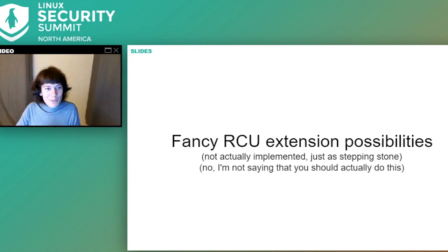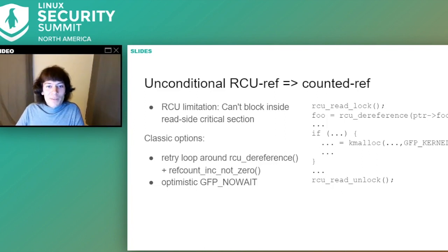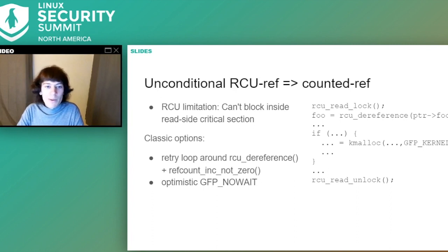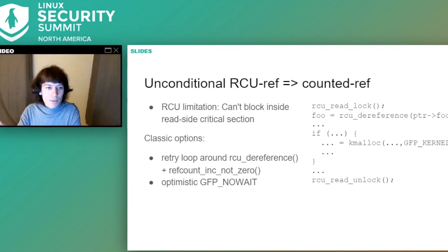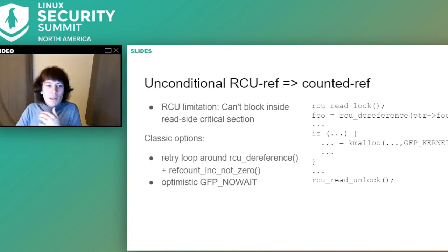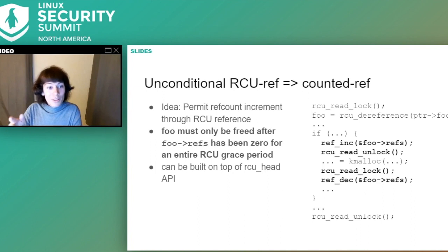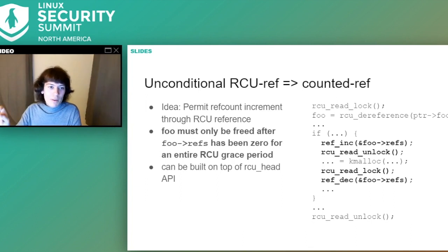This is just meant as a mental stepping stone — not necessarily something you should actually be implementing. When you're working with RCU, you often have the scenario where you're inside an RCU read-side critical section holding an RCU reference to some object, and you want to call something like kmalloc, but you can't because kmalloc can block. Classic options include a retry loop around RCU dereference and refcount increment-not-zero, or an optimistic GFP_NOWAIT path with a separate slow path — but that's ugly because you need to code extra slow paths.